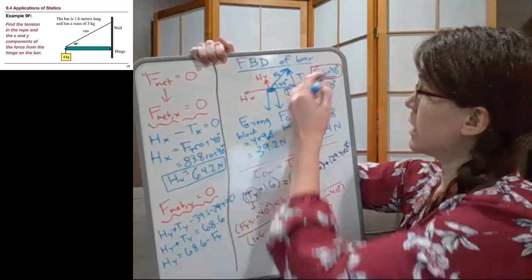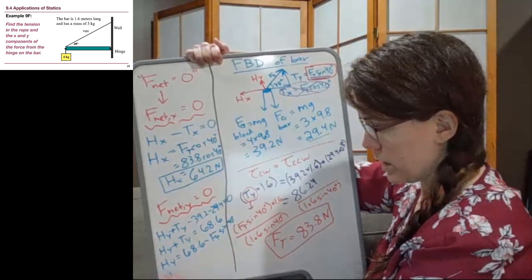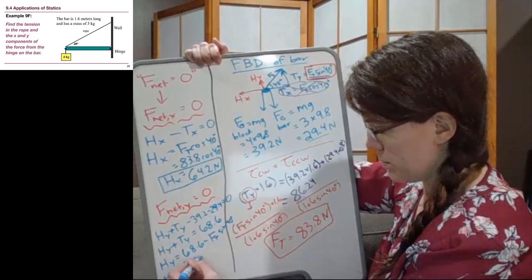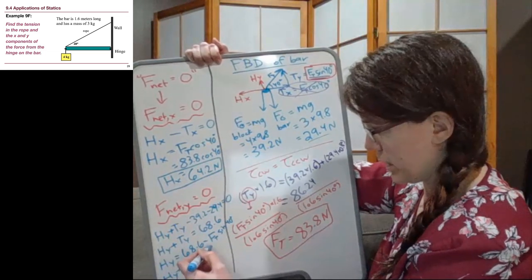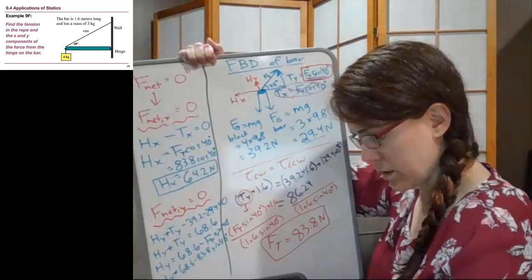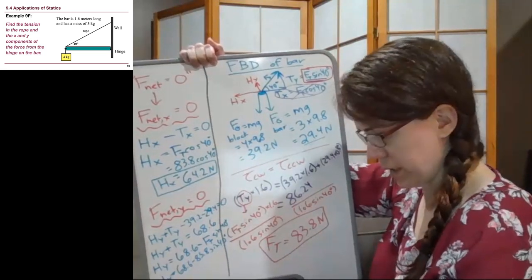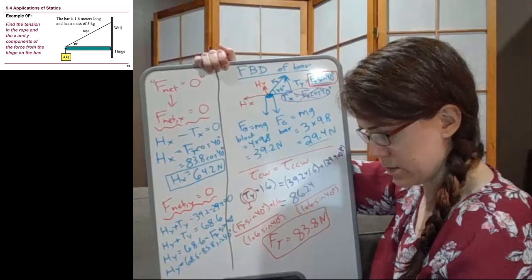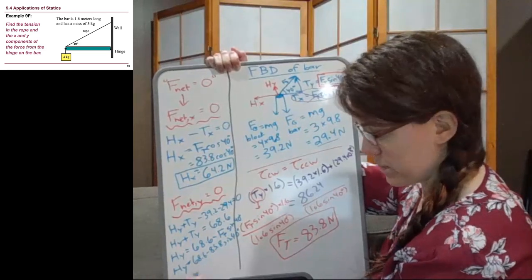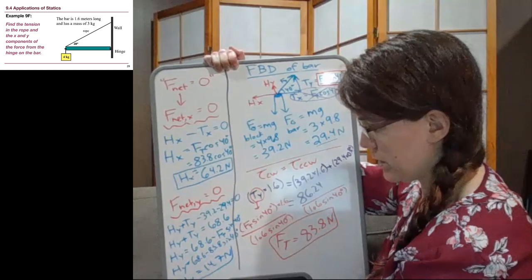And ty we can write down as the tension times the sine of 40 degrees. So the hinge force, and I'm going to subtract that ty on both sides, is 68.6 minus the tension, ft, times the sine of 40 degrees. So the hinge force in the y direction is 68.6 minus 83.8 sine 40 degrees. And we get 14.7 newtons.